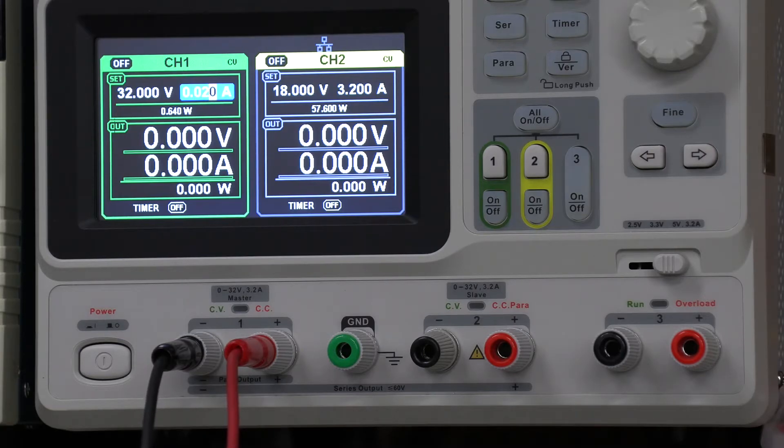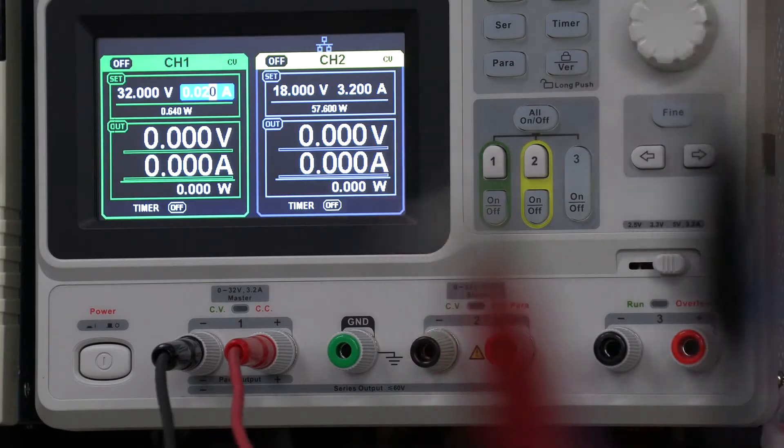So this one here will be our second Zener test. And once again, it ramps up the voltage until it reaches the 20 milliamps that you have set. And with the Zener, that voltage will be the Zener voltage. So here we go. We've got our second one set up here.